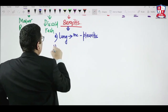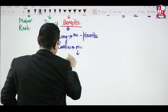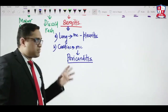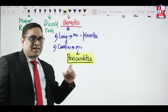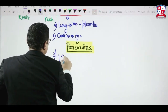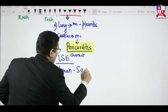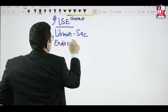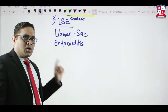For SLE heart, the most common presentation is pericarditis — this was an All India 2016 question. Libman-Sacks endocarditis is the characteristic finding of the heart in SLE, but the most common is always pericarditis. Libman-Sacks endocarditis is characteristic, not most common.